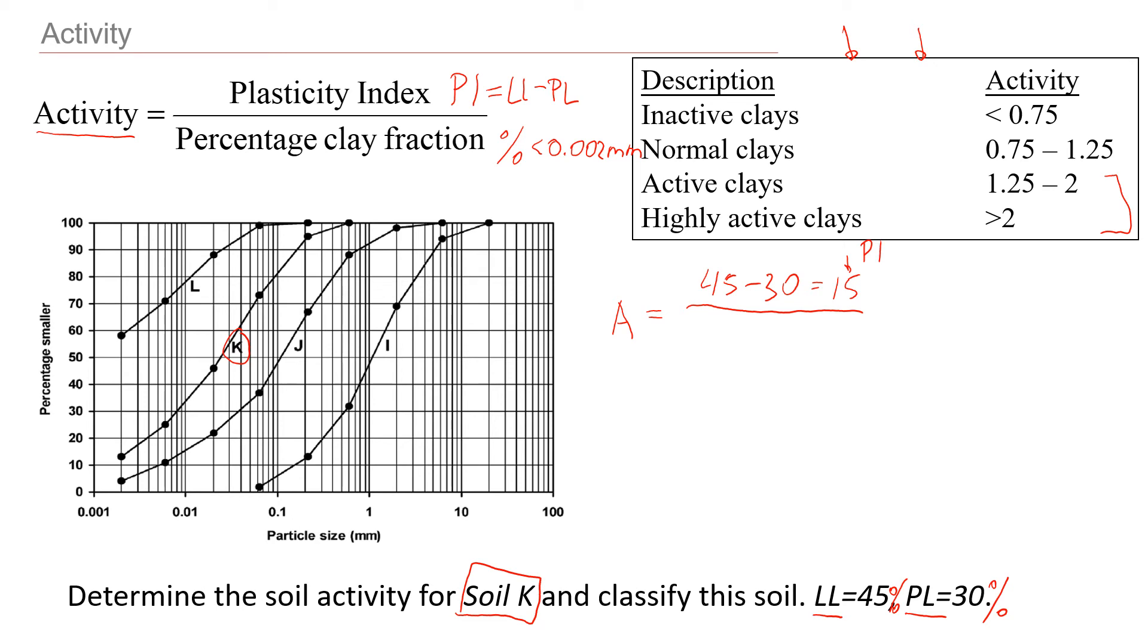And now we need to get the percentage of clay fraction. We're going to look at this graph. This is OK. And this will be 0.002 millimeters. Everything that goes this way will be clay. We'll see where... it's OK here. It will give us about 14%, right? It will be 14 points somewhere here. 14% that is smaller, finer than this size, which means that 14% will be clay.